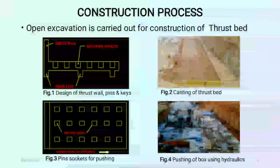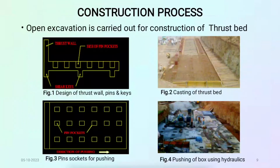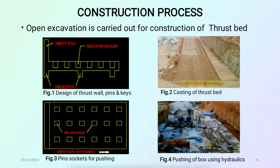Now the construction process: open excavation is carried out for construction of the thrust bed. These four figures show the formation of thrust bed and pushing operation of box. Figure 1 shows the design of thrust wall, size of pin sockets, and shear keys. Figure 2 shows casting of thrust bed. Figure 3 shows pin sockets for pushing. Figure 4 shows pushing of box using hydraulics.